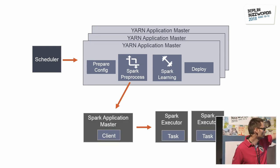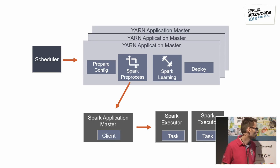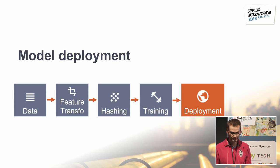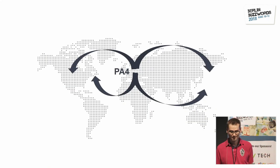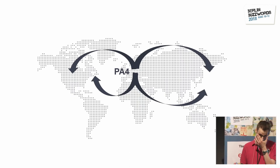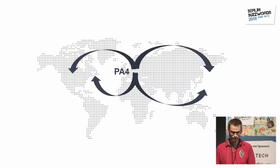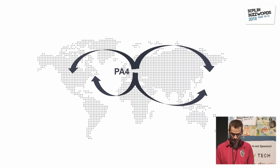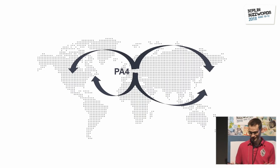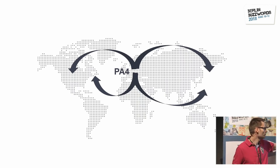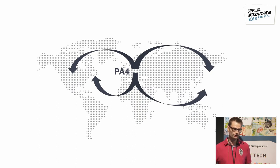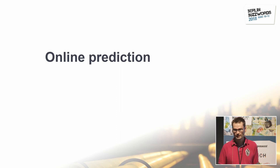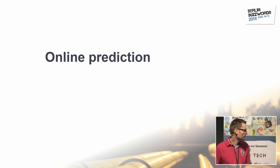The last step of the offline pipeline is deployment. All learning happens on our Hadoop cluster in Paris. We have our own data centers — no cloud — in the US, Europe, and Asia. We package the model into a zip file and copy it to all our FTP servers worldwide. Our online servers then download these models and use them for serving. The FTP servers use 10-gigabit Ethernet because it has to be fast.